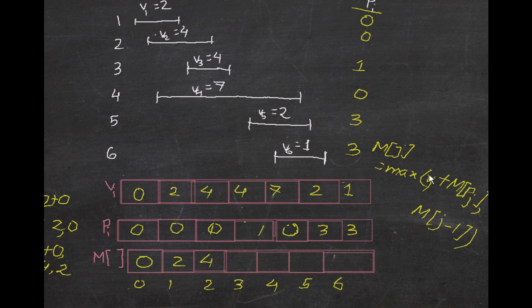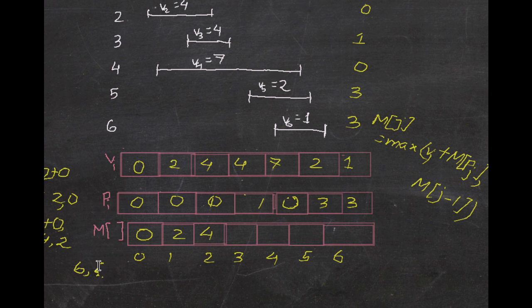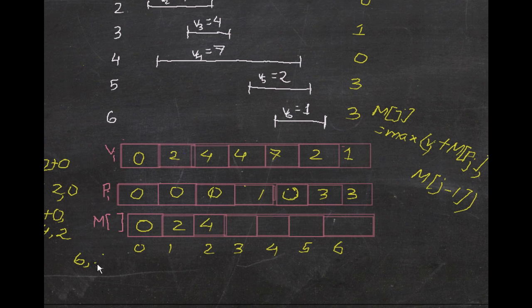For j=3: V3 is 4. So 4 plus M[P[3]], P[3] is 1, so M[1] = 2. That gives 4 plus 2 = 6. And M[j-1] is M[2] = 4. The maximum of 6 and 4 is 6, so M[3] = 6.